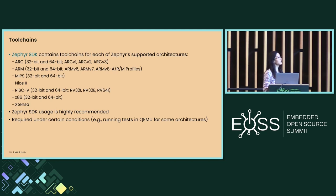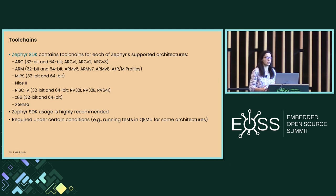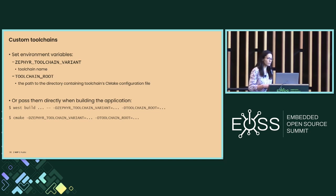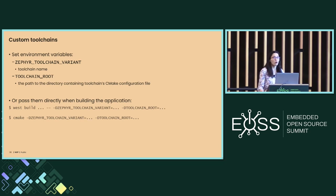Zephyr SDK contains toolchains for each Zephyr-supported architecture and is recommended (required in some conditions like CI). You can also use custom toolchains by defining two environment variables: ZEPHYR_TOOLCHAIN_VARIANT (the toolchain name) and TOOLCHAIN_ROOT (path to the directory with the toolchain's CMake configuration file). These can be set as environment variables or passed directly when building with west build or CMake.